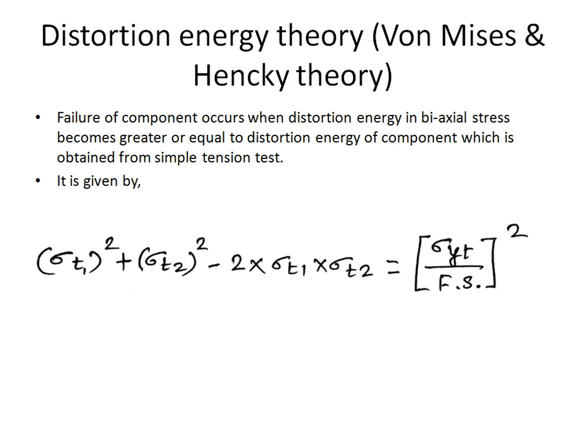The maximum distortion energy theory, also known as von Mises and Henke's theory, states that failure occurs when the maximum distortion energy in the component under biaxial stress equals or exceeds the distortion energy obtained from a simple tension test. It is given by: σt1² + σt2² − 2·σt1·σt2 = (σyt / fs)², where σt1 and σt2 are the two tensile stresses in the biaxial stress system. This theory is mainly used for ductile materials.